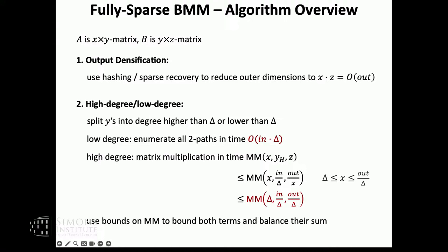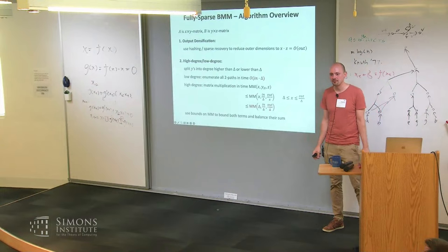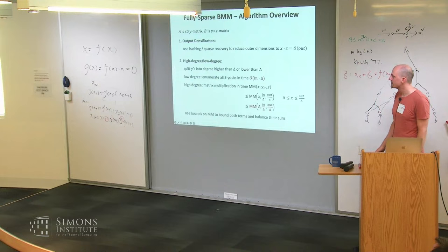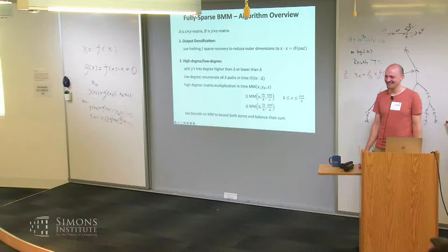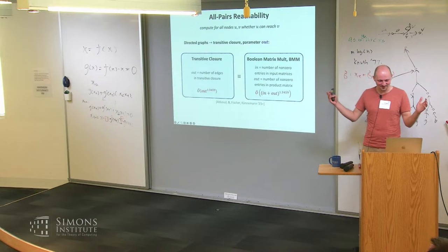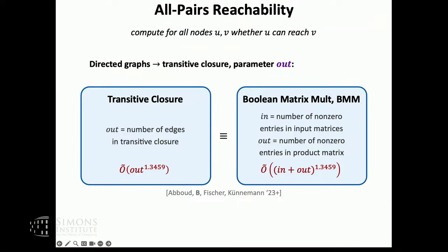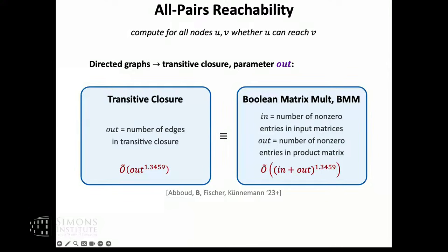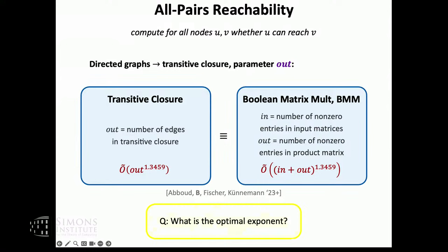This output densification is not a crucial step in the general framework, but here it's crucial to get our bounds. To summarize: we started talking about reachability questions and transitive closure in terms of parameters n and m. If you talk about output size as the parameter, the best we know now is output size to the 1.345. We don't really know what the optimal exponent is. With the techniques we are aware of, four-thirds is at least a barrier, and our result is very close to four-thirds, but we don't have a nice conditional lower bound.